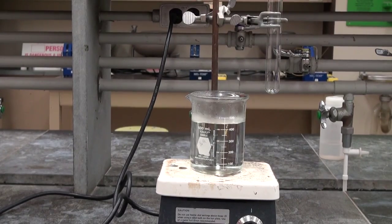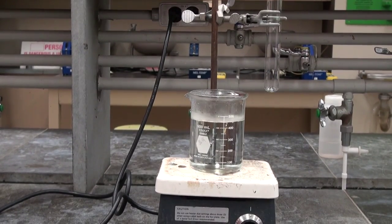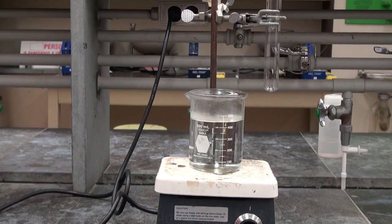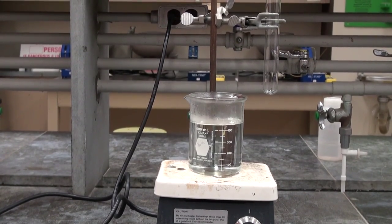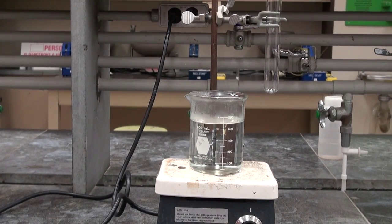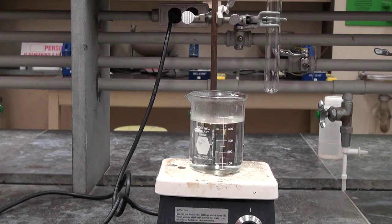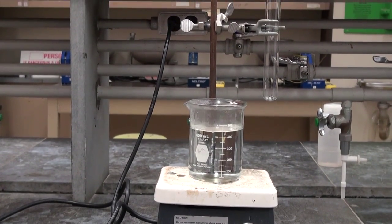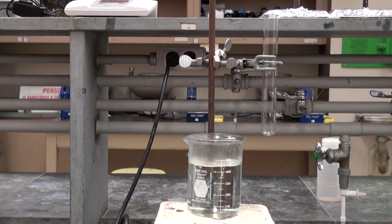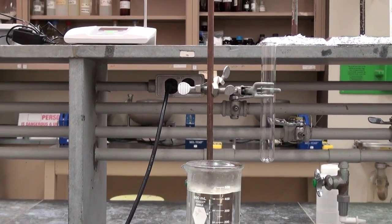With this apparatus we can attempt to measure the freezing point or melting points of a solid. We have a hot water bath, the beaker with the boiling water within it and a large test tube, and we'll place the solid that we want to measure the melting point for into the test tube.